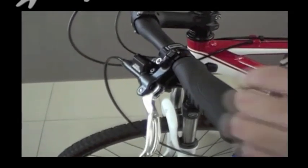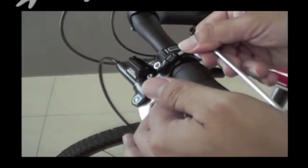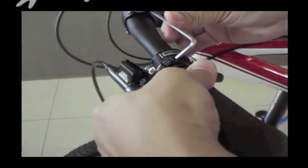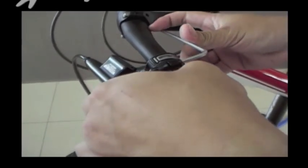To begin, mount the bike securely in a stand. Using your 4mm Allen key, simply rotate the brake assembly so that it is parallel to the ground.